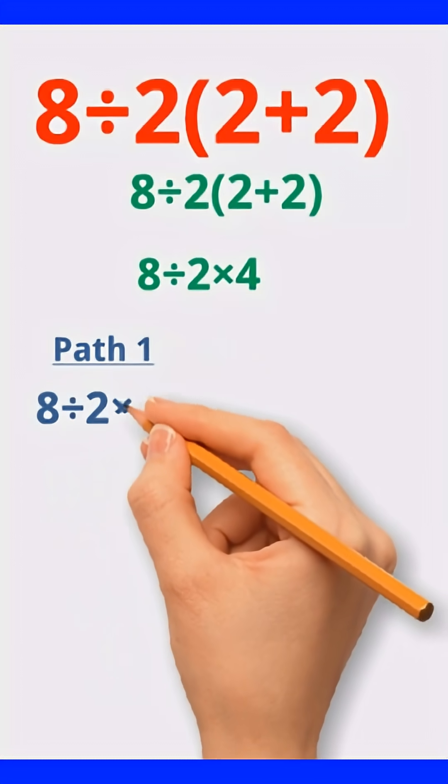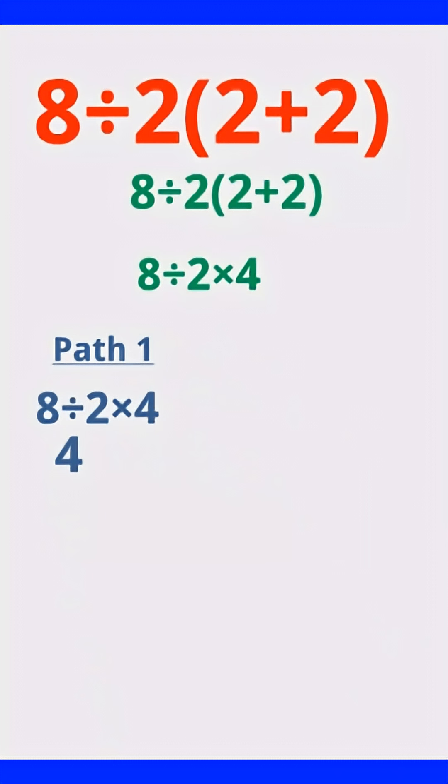Path 1. Left to right. 8 divided by 2 equals 4. Then 4 times 4 equals 16.